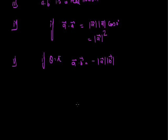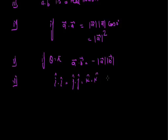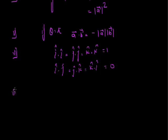For mutually perpendicular unit vectors î, ĵ, and k̂, we have: î·î = ĵ·ĵ = k̂·k̂ = 1, and î·ĵ = ĵ·k̂ = k̂·î = 0. Using this, we can identify the angle between two vectors: cosθ = a·b / (|a||b|).